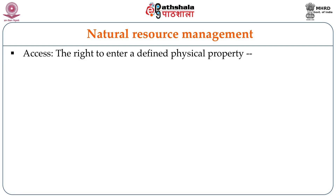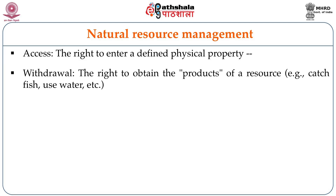In 1992, Schlager and Ostrom identified different types of rights. Access is the right to enter a defined physical property — for example, a person can go to a village forest. Withdrawal is the right to obtain the products of a resource. A grazer can go into the forest and collect fodder. A tribal can go into the forest and collect non-timber forest produce for his or her own use. That is the right of withdrawal.